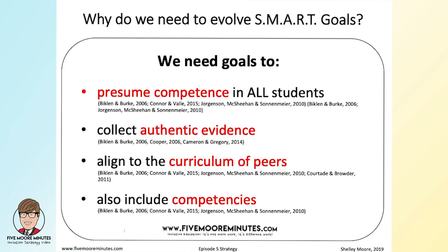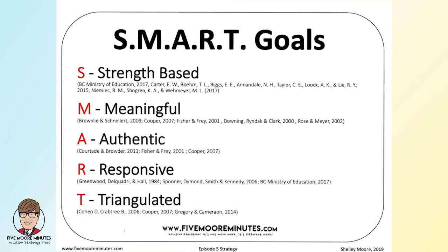We need the evidence we collect to be authentic and meaningful and actually connected to the places where these kids are included. Goals need to be aligned to the curriculum of peers — otherwise, why are we even doing this? Curriculum is also starting to include 21st century learning skills, or in British Columbia, we call them core competencies. If you actually look at the competencies, you'll see that a lot of the kids we're working with who have disabilities have many strengths in these areas. We also advocated for an evolution of SMART goals to a new acronym — still SMART, but shifting from quantitative to qualitative: Strength-based, Meaningful, Authentic, Responsive, and Triangulated evidence.